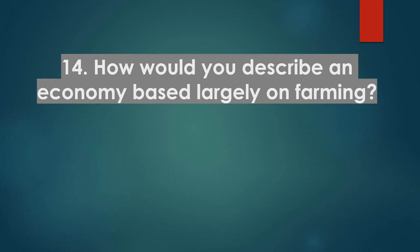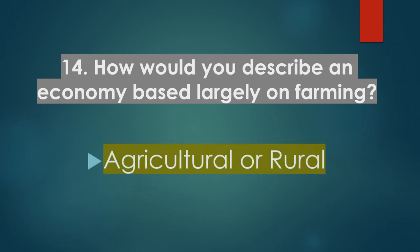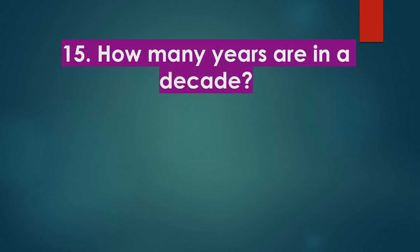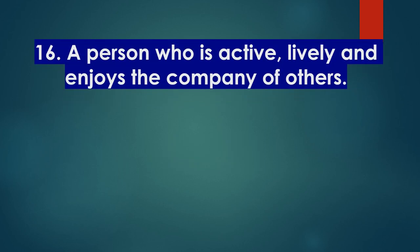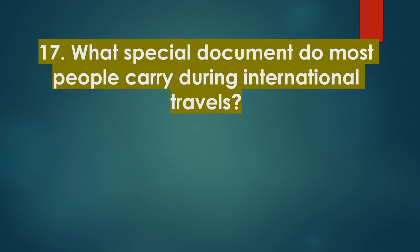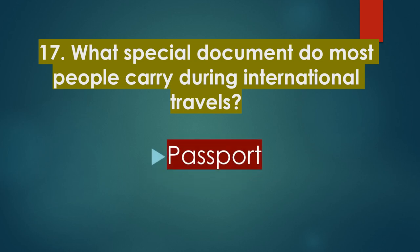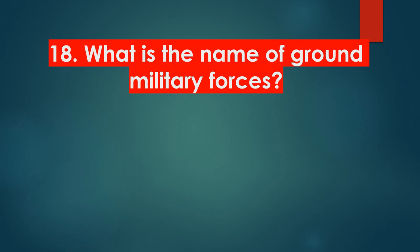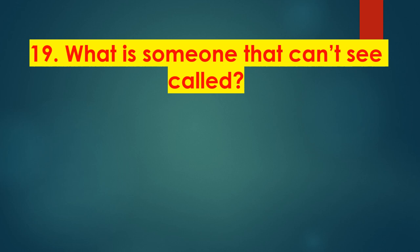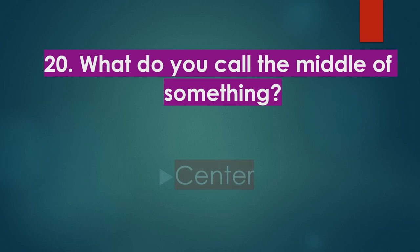How would you describe an economy based largely on farming — agricultural or rural? How many years are in a decade? Ten years. A person who is active, lively and enjoys the company of others? Extrovert. What special document do most people carry during international travels? Passport. What is the name of the Crown Military Forces? Army. What is someone that can't see called? Blind. What do you call the middle of something? Center.